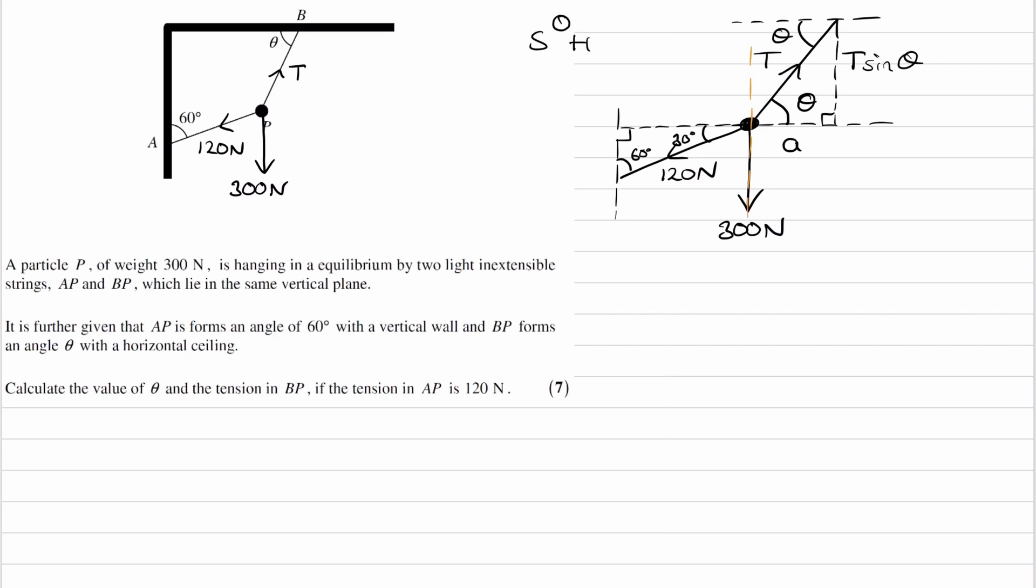And if this is the adjacent, that will end up being T cos theta. So the shortcut basically works like this: if you have the hypotenuse, and you're trying to work out either the opposite or the adjacent, they would be equal to either T sine theta or T cos theta.